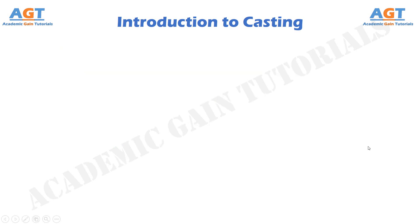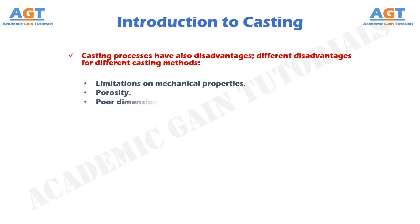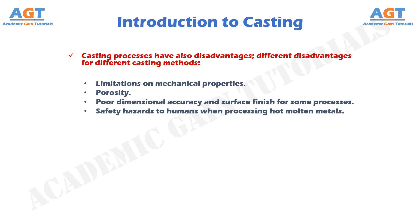Casting processes also have disadvantages. Different disadvantages for different casting methods include: limitations on mechanical properties, porosity, poor dimensional accuracy and surface finish for some processes, safety hazards to humans when processing hot molten metals, and environmental problems.